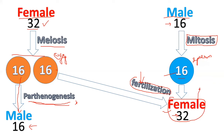This female can then convert into either a worker bee or a queen. If it is fed on royal jelly it will convert into a queen; otherwise it will convert into a worker bee.